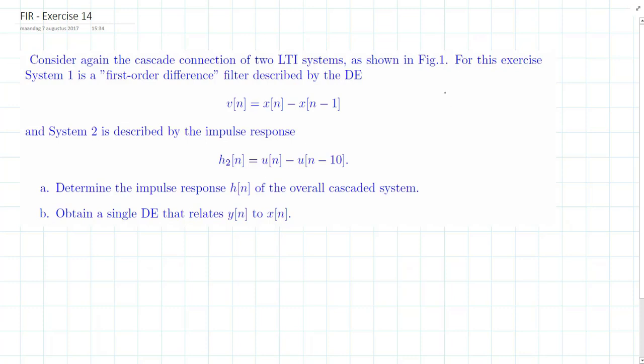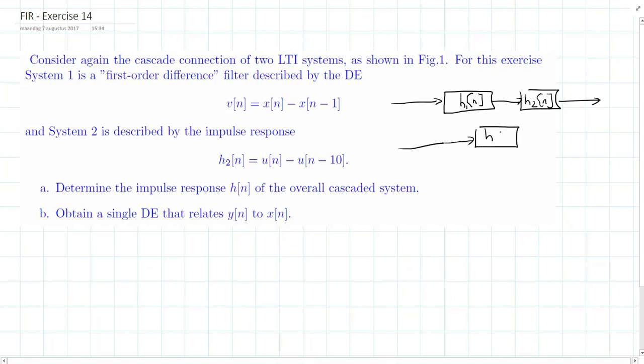So in this exercise what we actually have is a filter with impulse response h of n, let's say h1 of n, and a filter h2 of n. And what we can do is we can replace these two filters by simply one filter, h of n.